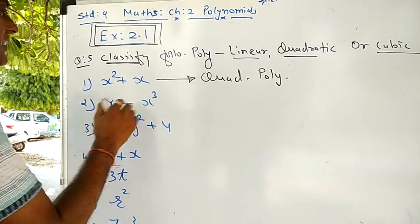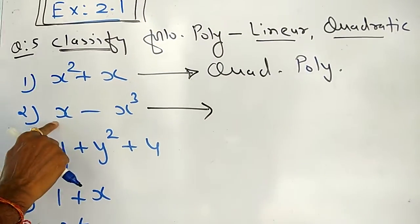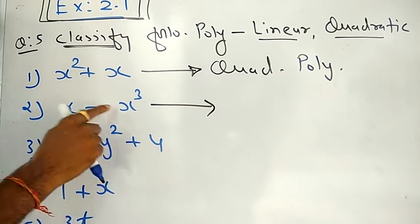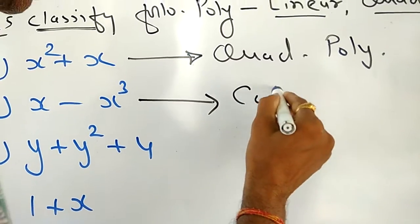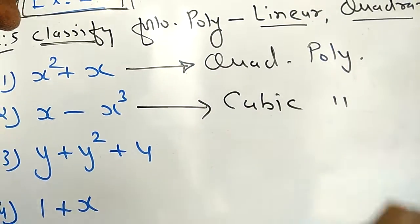Second one, the highest exponent of this - first term has exponent 1, second term has 3. Therefore, 3, so it's cubic polynomial.